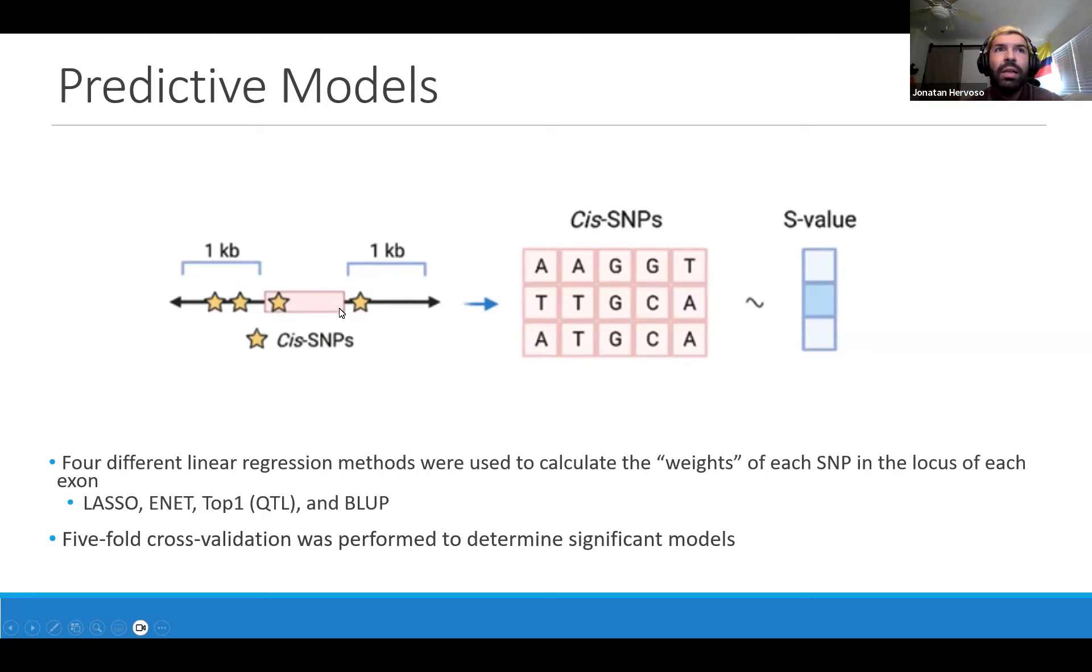From here, what we can do is build a matrix of our cis-SNPs and genotypes from the SNPs we're looking at and relate that to the splicing value we obtained from the quantification and transformation before. We've used four different linear regression methods to calculate weights - we dub weights as a signature - to calculate the effect size of each of these cis-SNPs on our splicing value in the locus of each of these exons.